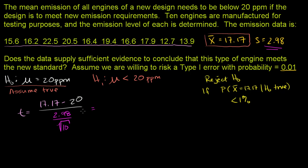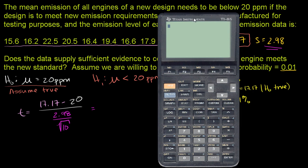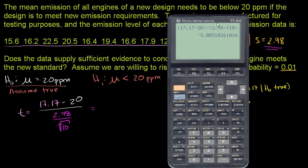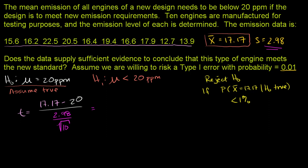Using the calculator: (17.17 minus 20) divided by 2.98 divided by the square root of 10. The result is almost exactly negative 3. Our t-statistic is negative 3.00.